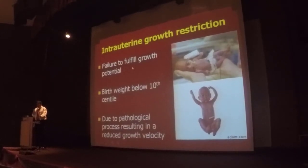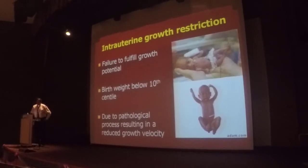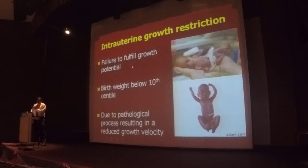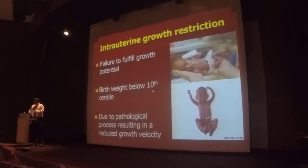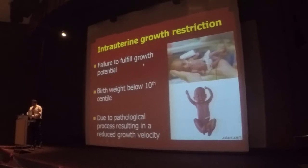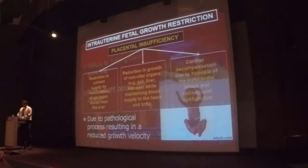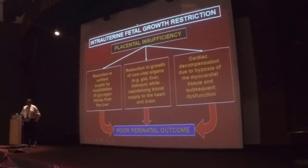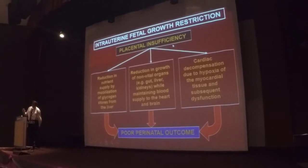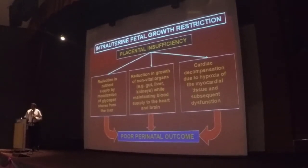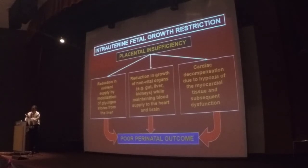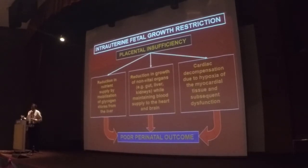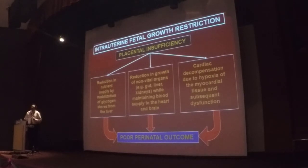The definition of IUGR is failure to fulfill growth potential, with fetal weight below the 5th or 10th centile — most of the time we take the 10th centile. This is due to a pathological process resulting in reduced growth velocity. One of the most common causes is placental insufficiency. If the placenta is not functioning well, the blood going to the fetus is affected, and there will be an effect on the growth pattern.